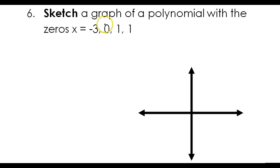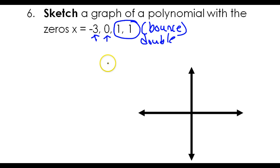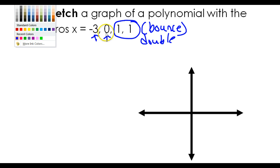So here's an example. I have two normal single roots at negative 3 and at zero, which means the graph should pass straight through those. But I've got a double root at 1, which means that one should be a bounce.